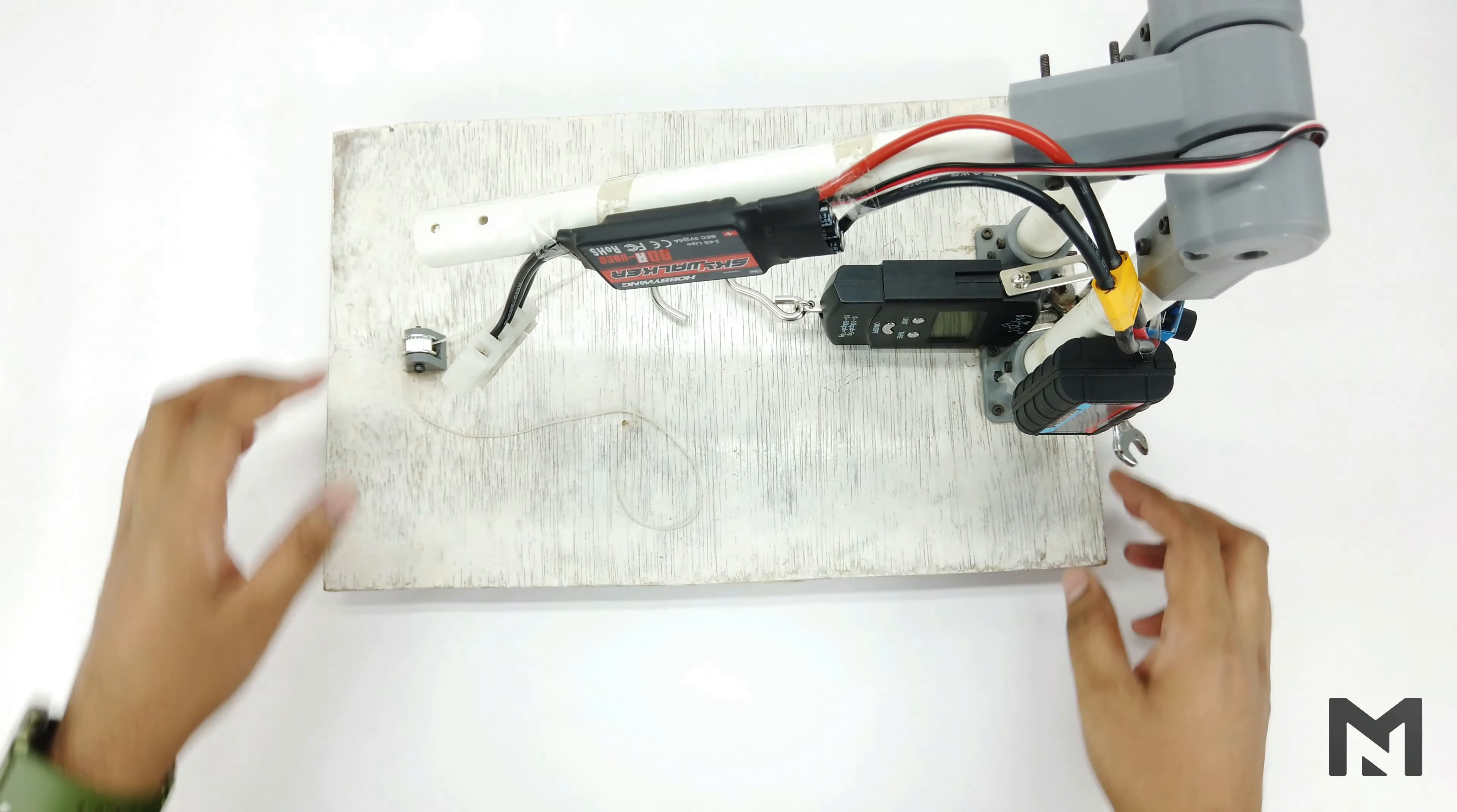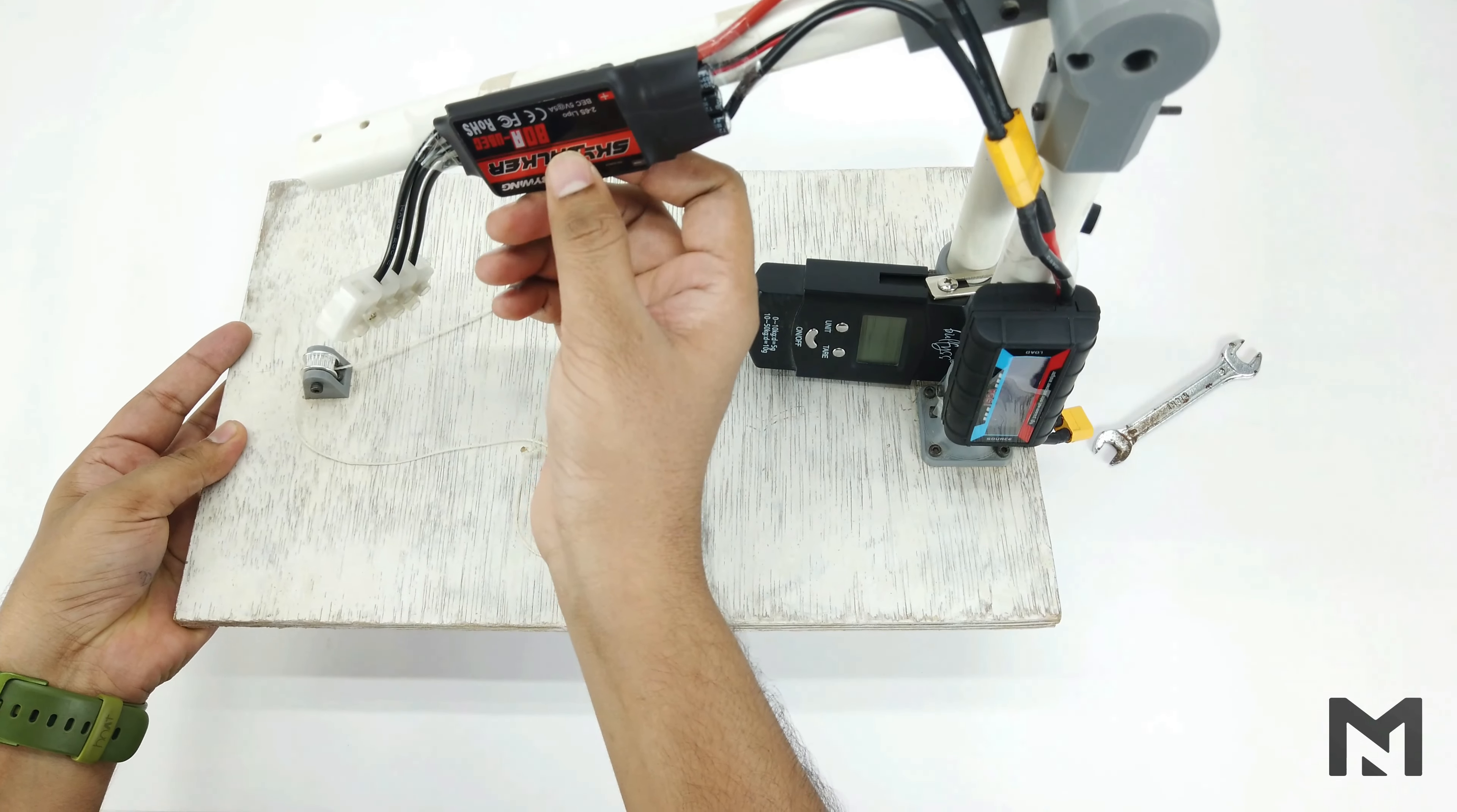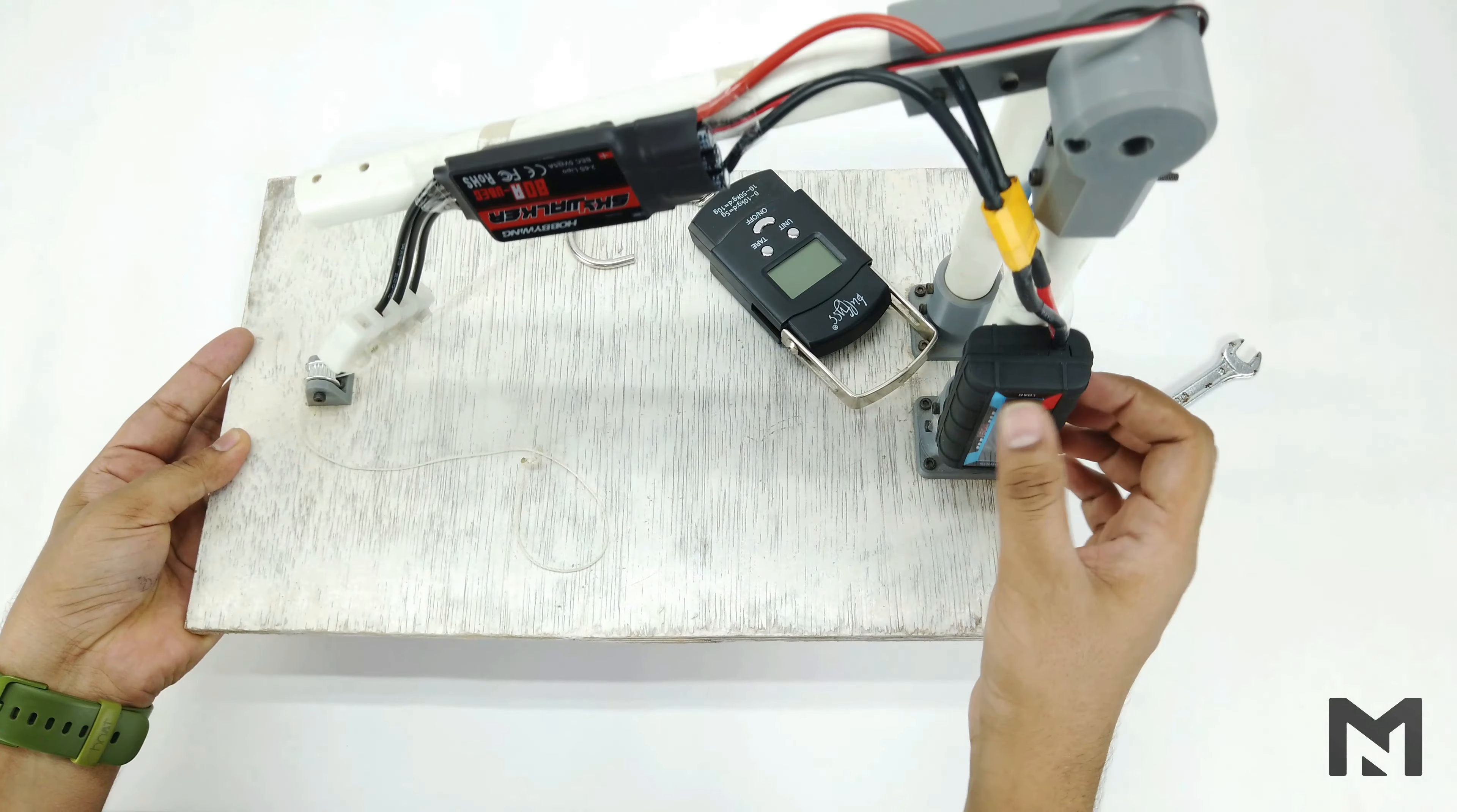This is my thrust test rig. You have already seen this in my previous videos. I am using this 80A ESC and this spring balance will calculate the thrust. And this wattmeter will give me all the readings.